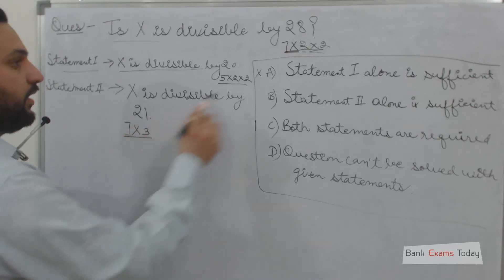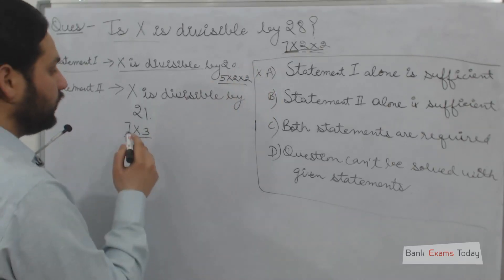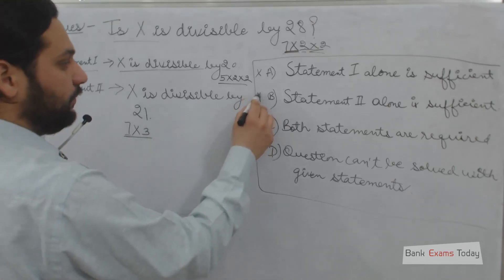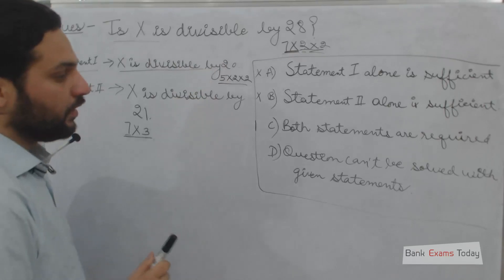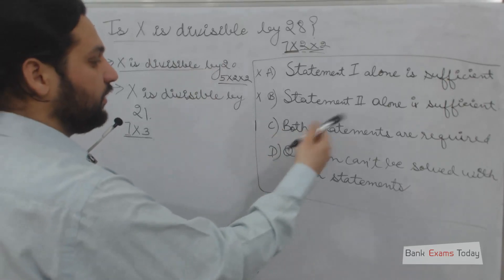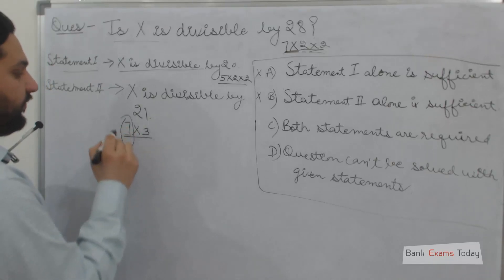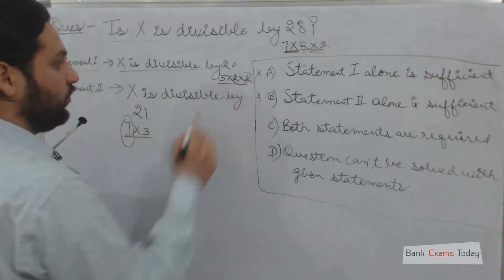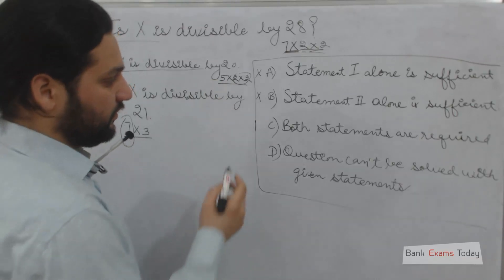If we take both statements together, we get 7 from statement 2 and 2 times 2 equals 4 from statement 1. We can solve the question easily. The answer is C.